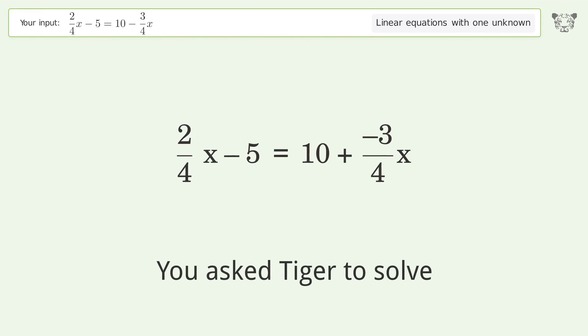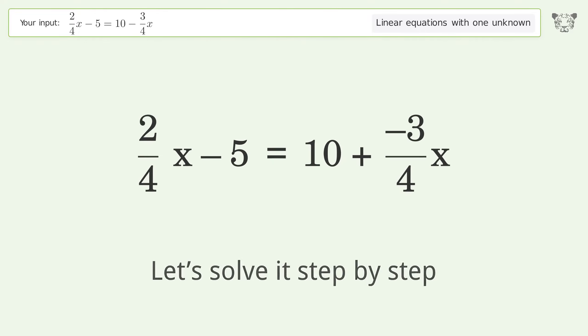You ask Tiger to solve this, which deals with linear equations with one unknown. The final result is x equals 12. Let's solve it step by step. Simplify the expression and combine like terms.